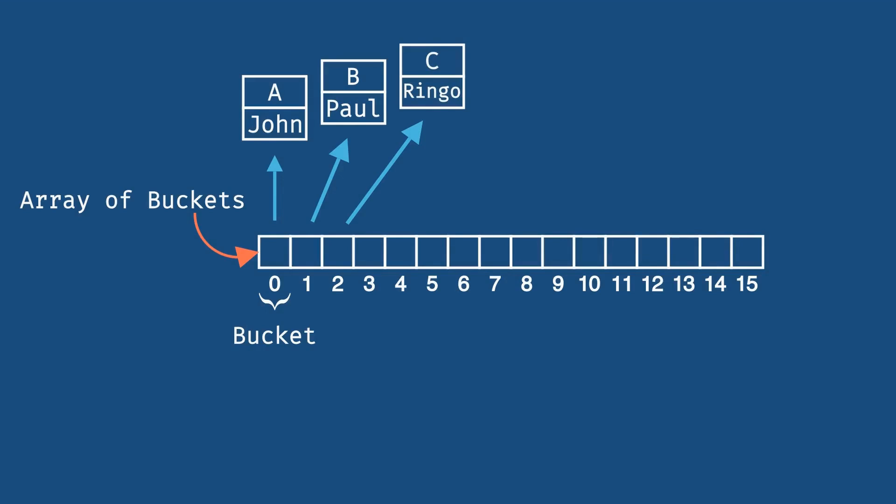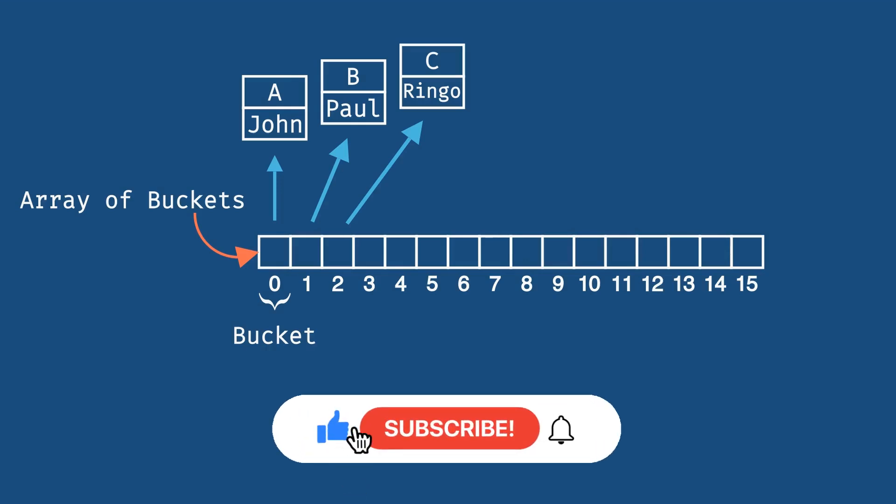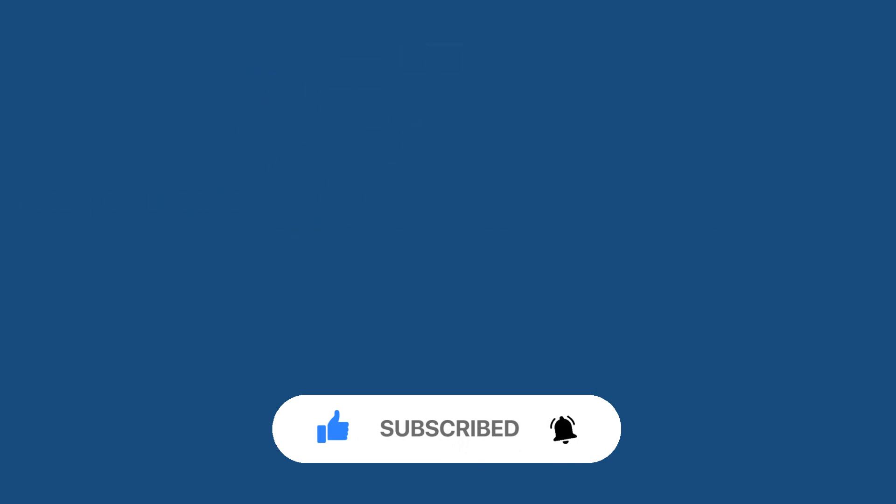So now that we have a basic understanding of the hash map data structure, which uses this array of buckets. Again, each slot is called a bucket. And by default, we have an array of size 16. And then the actual entries are stored on a linked list. Let's see how each entry was actually stored on each of these slots.